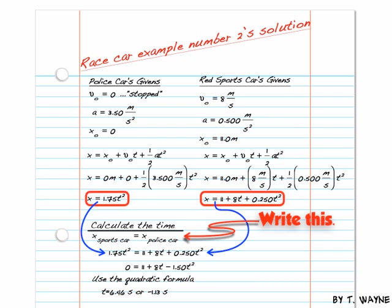That means my two equations are equal to each other. So the expression becomes 1.75 T squared equals 11 plus 8T plus 0.250 T squared. Now, I solve this by putting all my T's on one side, or everything on one side of the equation, and I use the quadratic formula.